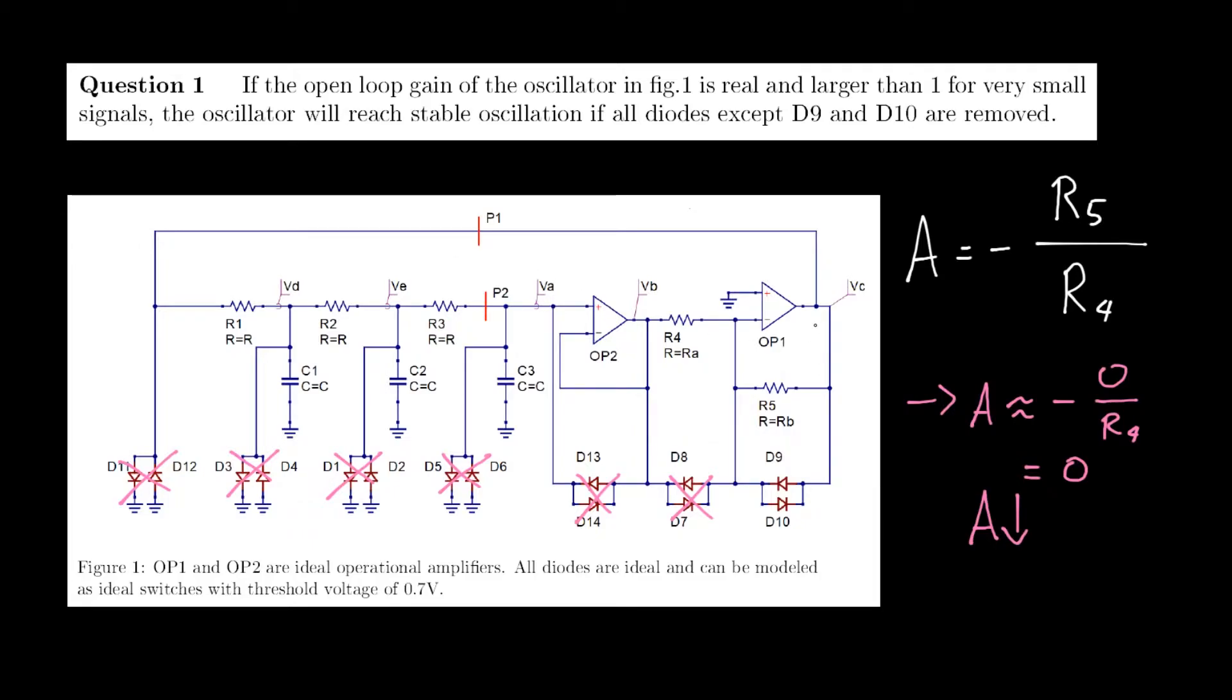at a certain point, the gain here will become smaller. As a consequence, the unstable oscillation will be stabilized.